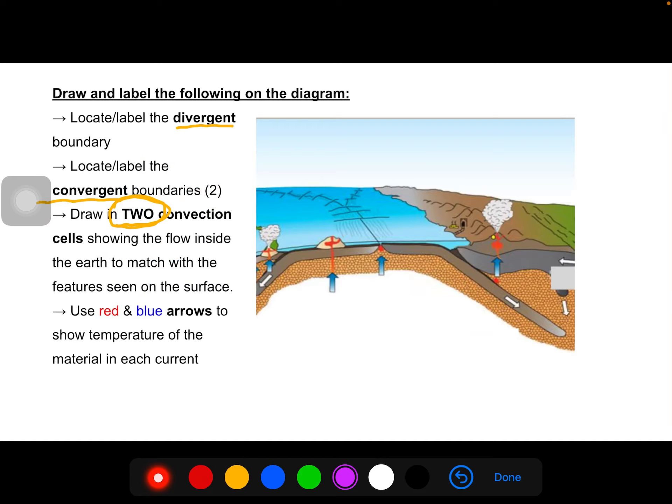So looking at our picture, you most likely should be able to indicate the two convergent boundaries. We see one here where the crust is being pulled down and we also see one here where the crust is being pulled down.